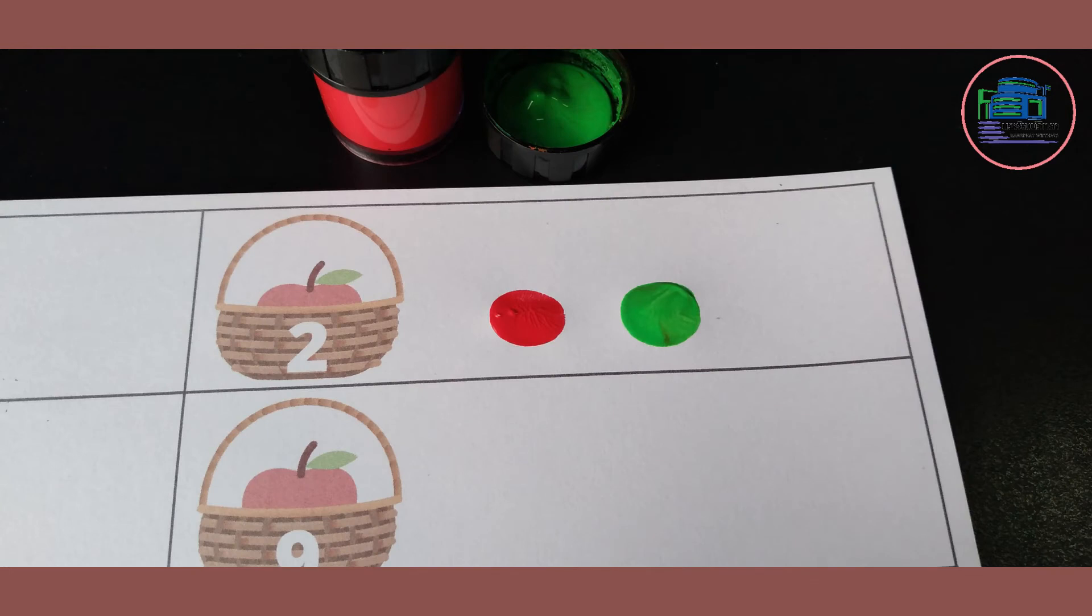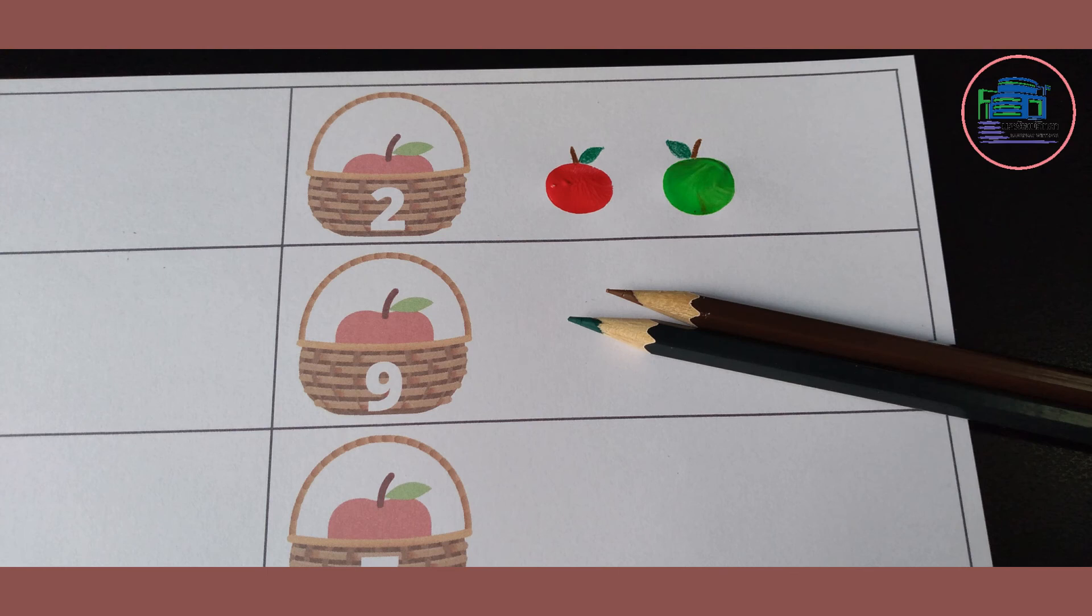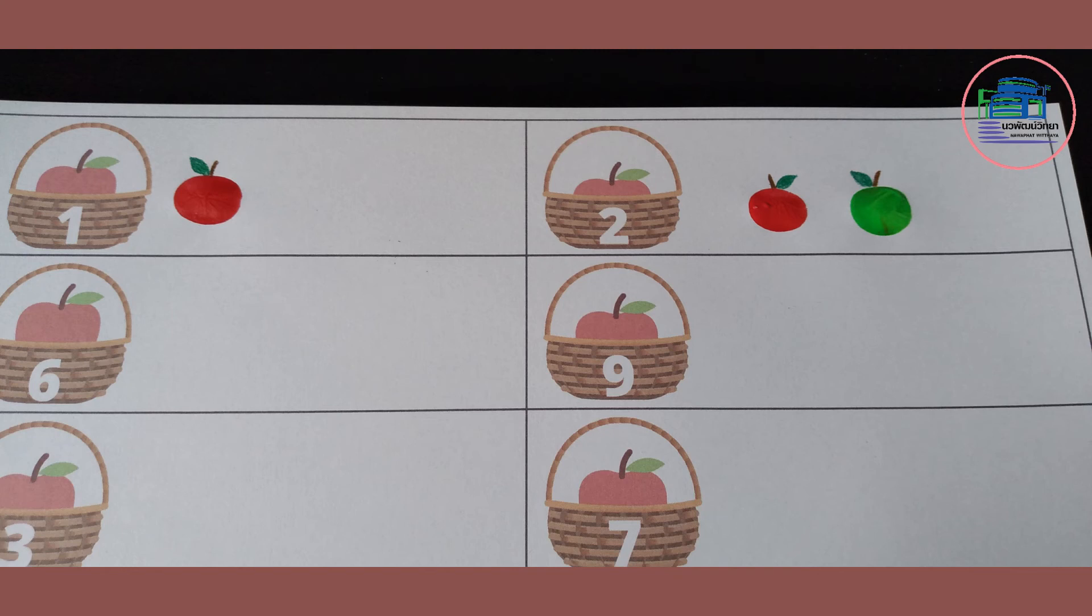The next basket says two. Let's use our paint and our pencils to make two apples. I've used red and green but you can use any colors you want your apples to be.